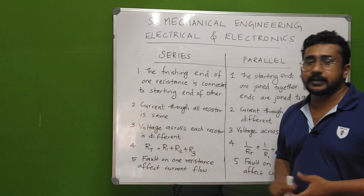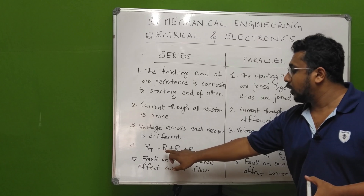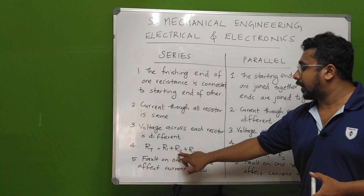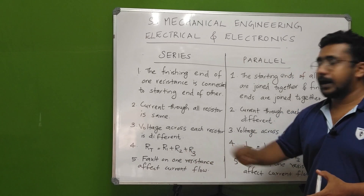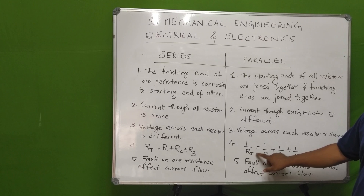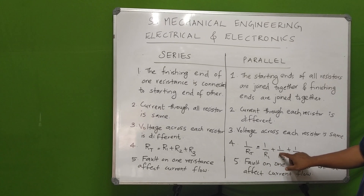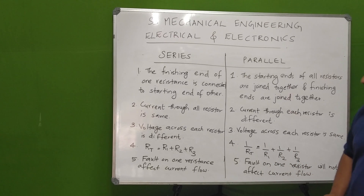For a series connection, the total resistance equation is: RT = R1 + R2 + R3. For a parallel connection: 1/RT = 1/R1 + 1/R2 + 1/R3.